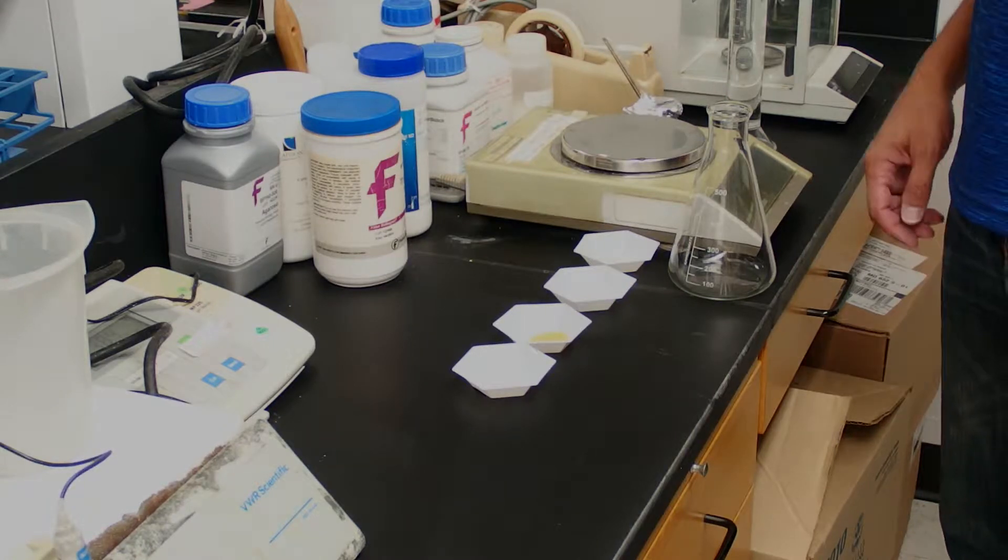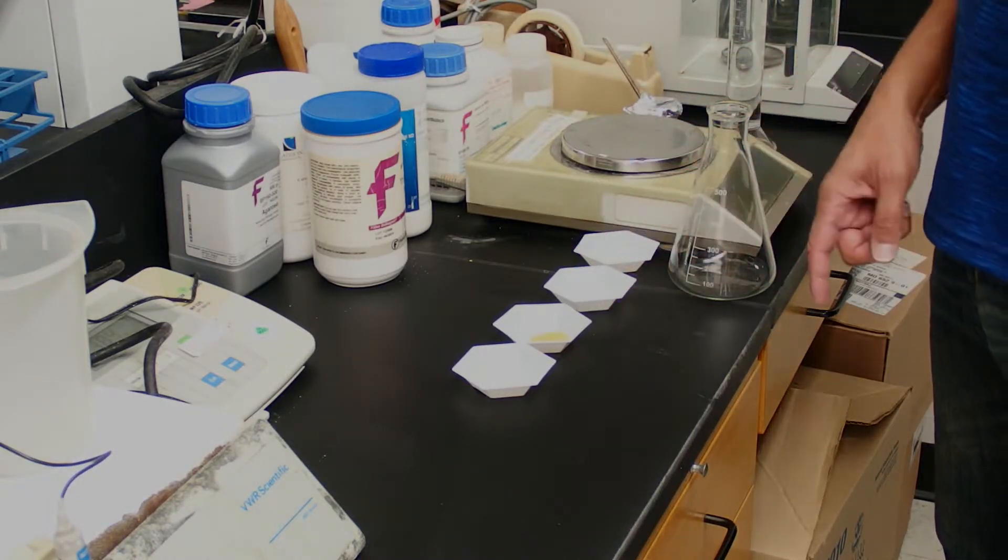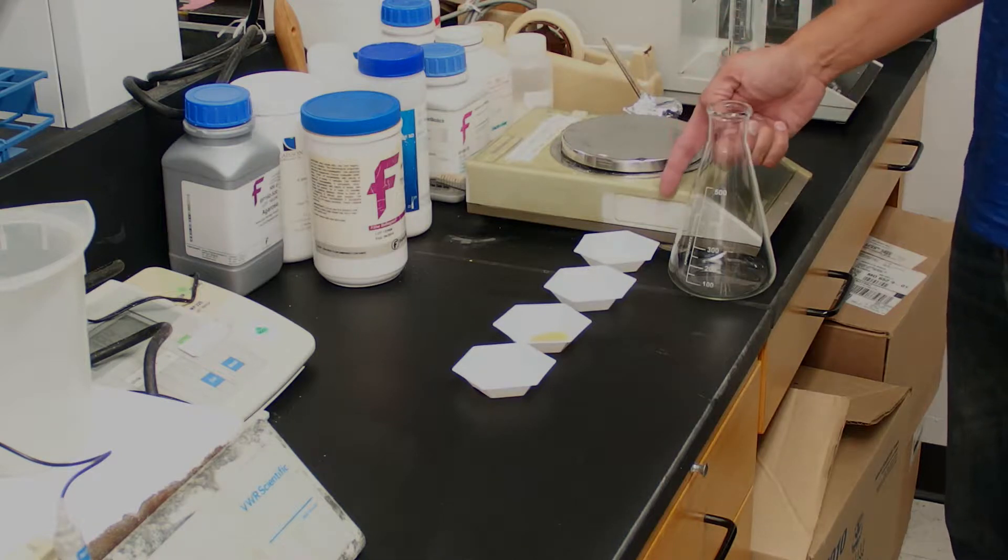I'm going to show you how to make LB agar plates to grow E. coli on. You'll have to weigh out the desired amount of tryptone, yeast extract, sodium chloride, and agar.